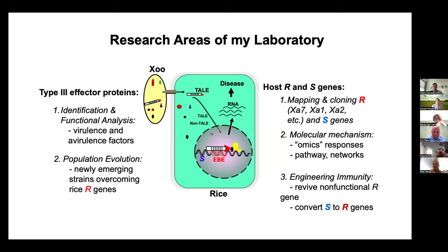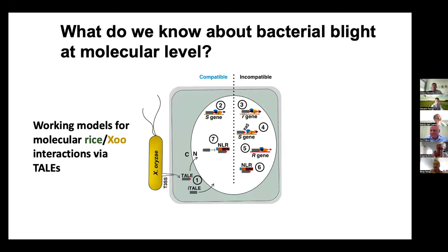First, we work on the bacterial blight XOO side to identify some effector genes, especially TAL effector type 3 effectors, and then try to identify the host targets. Those targets will be either resistant genes or disease susceptibility genes. We study the interaction between those two components — from the bacteria side and the host side — and finally engineer disease resistance. Here is the disease model: XOO interacts with the plant cell and uses a type 3 secretion system to inject the TAL effector.